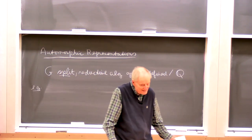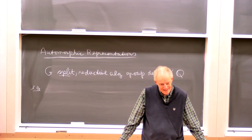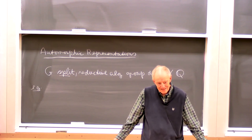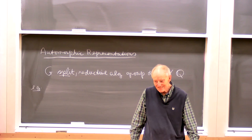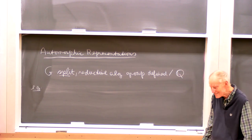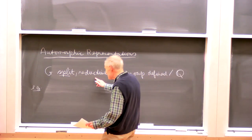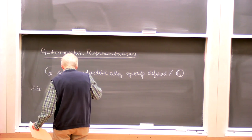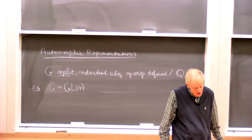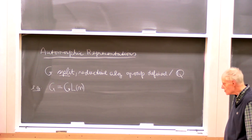Algebraic groups are just the background. Langlands himself once said: 'Algebraic group is just a subject with a bunch of lemmas in it. All you have to do is learn what the lemmas mean and memorize the lemmas. You don't have to take a year off to learn what algebraic groups are — especially if you know something about Lie groups.' So one can just think of G as the general linear group: the group of n×n matrices with nonzero determinant, under matrix multiplication.